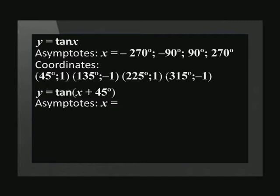p equals 45, so we know that this graph has been shifted 45 units to the left. Next, we subtract 45 from each asymptote and x-coordinate. The new asymptotes are -315°, -135°,